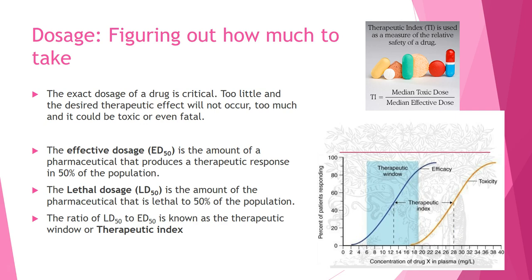To figure out how much will be an effective dose for a patient, a lot of work is done. Too little and we won't get the desired therapeutic effect — that being the beneficial effect. Too much and it can be toxic or even fatal, and it will certainly increase side effects. The effective dosage is given the terminology ED50, which is the amount of a product that produces a therapeutic response in 50% of the population. Everyone reacts differently — our metabolisms are all different — so we're looking at a distribution, much like a distribution of grades.